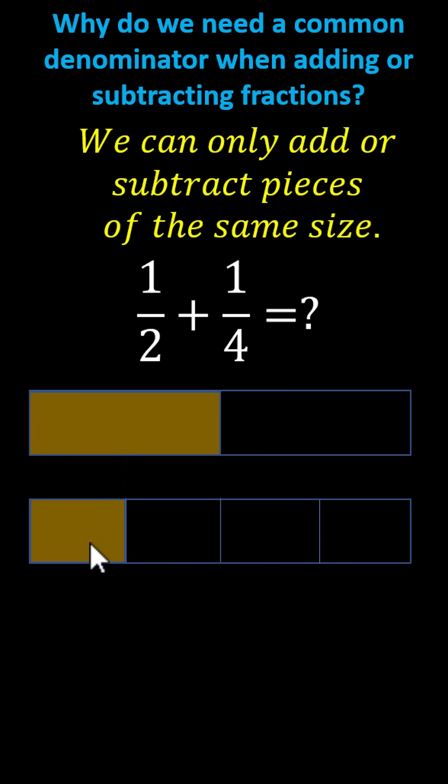Again, we can't find the sum right now because the pieces are not the same size, but notice if we were to take the model for one-half and cut or partition the whole unit into four equal parts, like we see here.